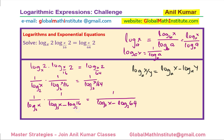Let me rewrite by evaluating the log values. Log base 2 of 16 equals 4, since 16 is 2 to the power of 4. So that becomes minus 4 in the denominator. And log base 2 of 64 equals 6, since 64 is 2 to the power of 6. So the right-hand side denominator becomes log base 2 of x minus 6.